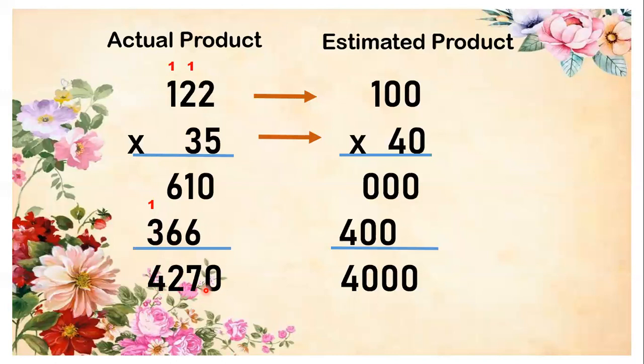Now let's go to the estimated product. First rule is round off first the multiplicand and the multiplier to the highest or greatest place value. Then multiply the rounded numbers.